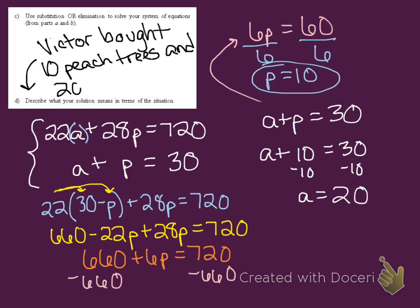So for letter D, you're supposed to describe what your solution means in this situation. Victor bought 10 peach trees and 20 apple trees. You just need to make sure that you attach any units to your answer and that you explain what it means according to what was going on in the situation.